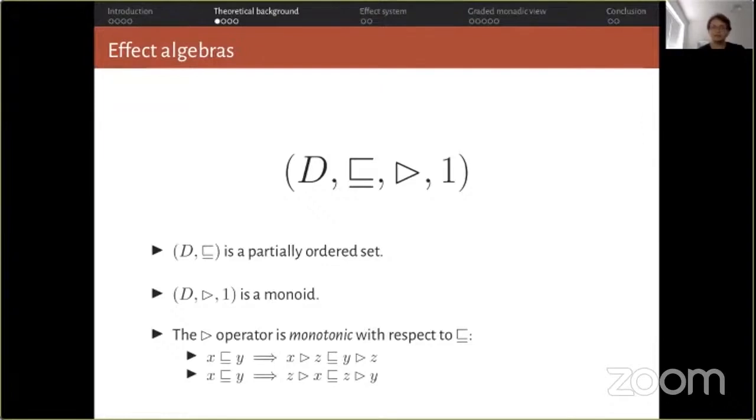Definitions and assumptions of effect algebras differ depending on the author, and we assume a fairly general structure. The algebra has a carrier set D, a binary relation representing sub-effecting, a multiplication operation representing sequencing, and an identity effect used for pure expressions. First, we assume D with sub-effecting as a partial order, and that the multiplication operator satisfies the monoid axioms, associativity and identity. In addition, we assume that multiplication is monotonic with respect to sub-effecting. If X is a sub-effect of Y, then X sequence with Z is a sub-effect of Y sequence with Z, and the other way around.